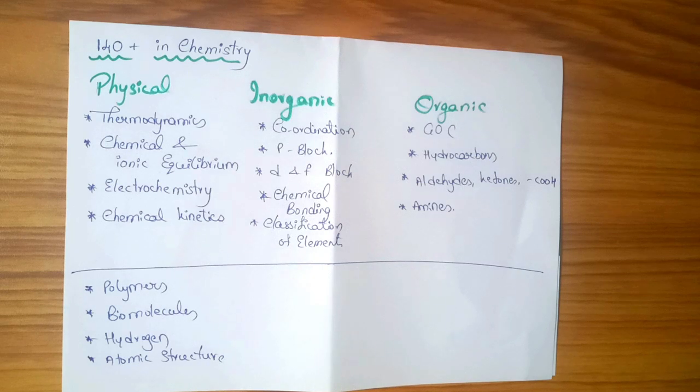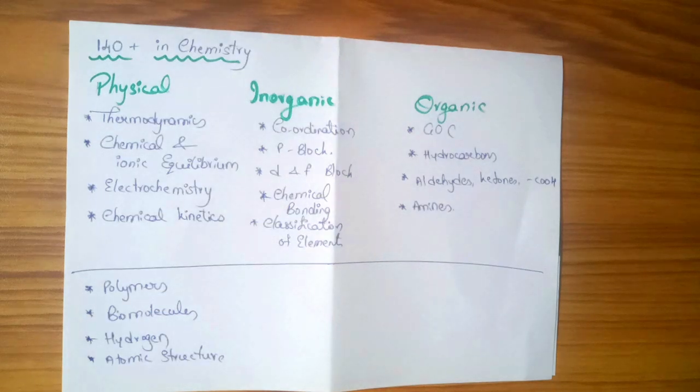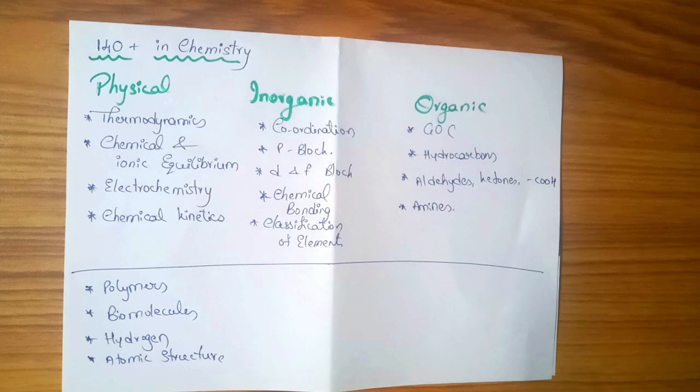I am going to tell you about physical chemistry, inorganic chemistry, and organic chemistry. Physical chemistry is the most difficult. The reason is that for PCB students, thermodynamics and ionic equilibrium, electrochemistry, and chemical kinetics can be difficult.